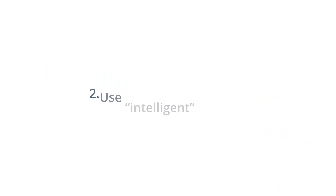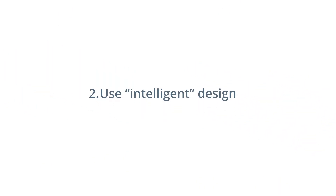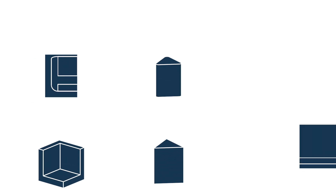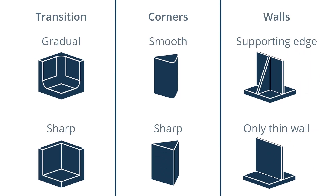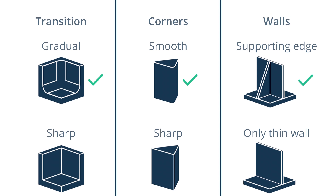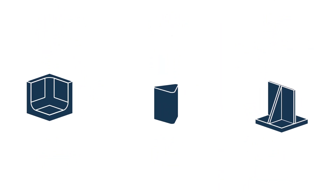Number two: use intelligent design. There are a few common tips to create a well-designed 3D printed part. Use gradual transitions between adjoining surfaces. Avoid sharp corners. Avoid thin or tall unsupported walls — they might buckle or warp.